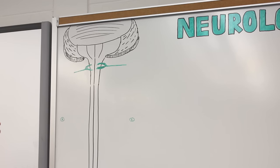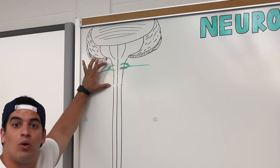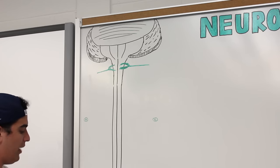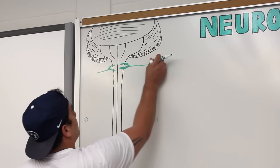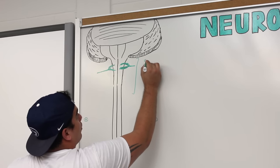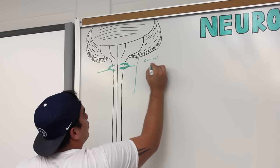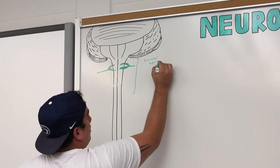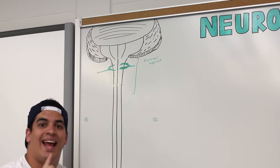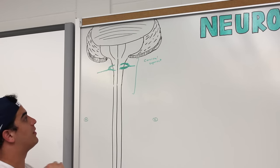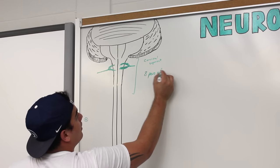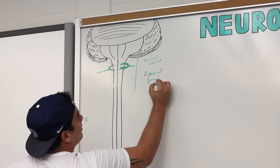When we take the spinal cord, we're going to separate it into different segments or regions. The green section here — let's say this is the cervical segment. This is going to consist of eight pairs of spinal nerves.